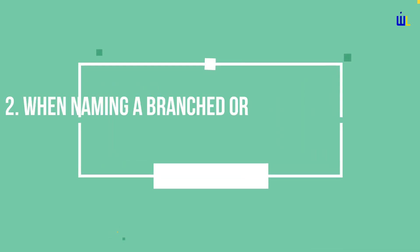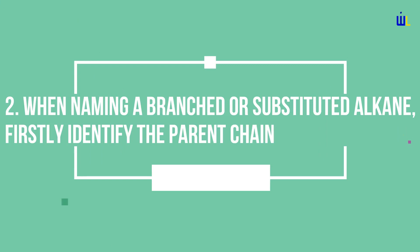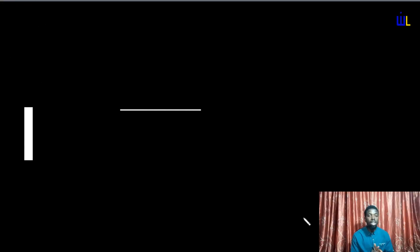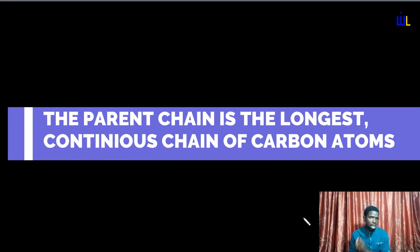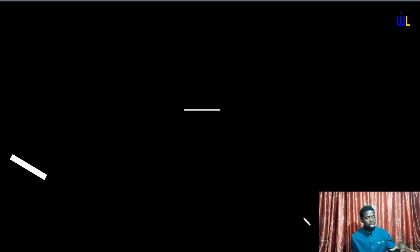Rule number two simply states that when naming a branched or substituted alkane, firstly identify the parent chain. The parent chain is the longest continuous chain of carbon atoms. Note that the parent chain does not always have to be straight — in some cases it might be bent. All you need to do is count from terminal to terminal, one end of the carbon chain to the other, and find the one with the longest chain.